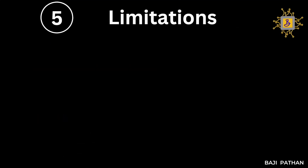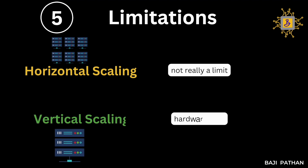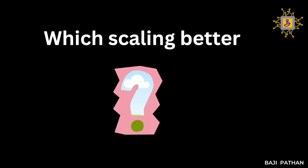The final factor is limitations. In terms of horizontal scaling, there is no real limit because if the load increases, we can simply add more machines to handle it. Whereas in vertical scaling, we can only go up to a certain limit because the capacity resides in a single machine.